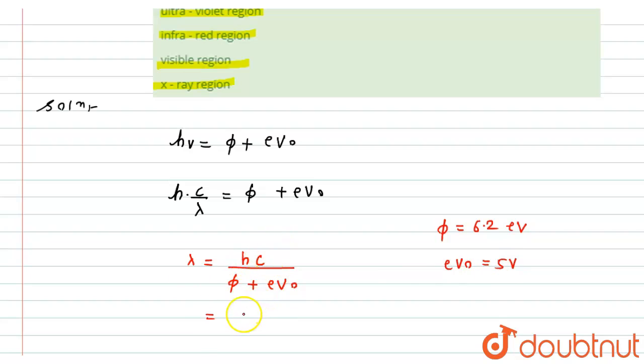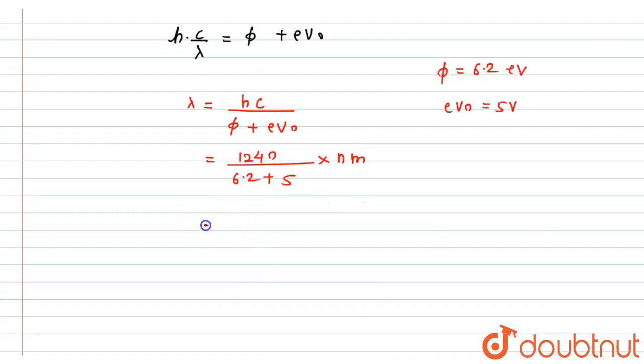Now we know that the value of Hc equals 1240. That whole divided by value of φ that is 6.2 plus value of eV₀ will be 5, and this answer we will get in nanometer. So if we simplify this, we get 1240 divided by 11.2 into nano, which can be written as 10 raise to minus 9. So if we divide this, we get 112.7 into 10 raise to minus 9 meter.